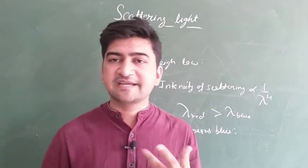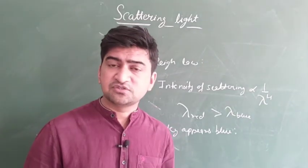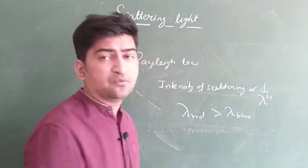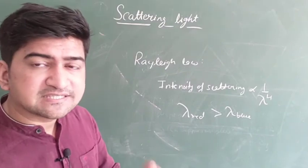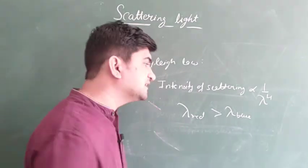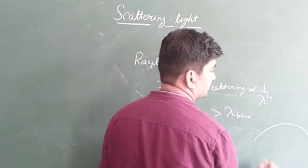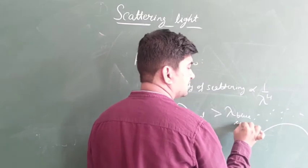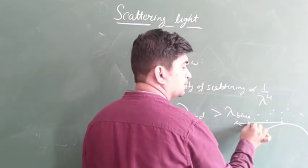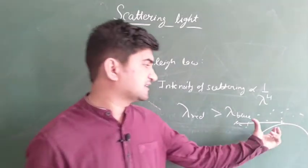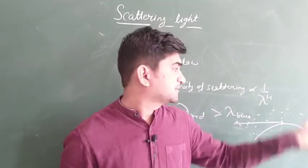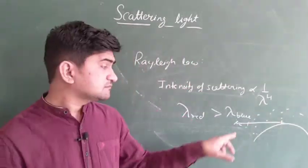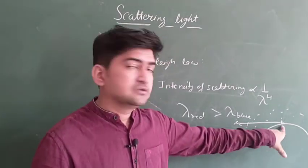Next, second application: sun appears red during sunrise and sunset. Why? The reason is that during sunrise and sunset, the earth and atmosphere with gases are here, sun is here. Light reaching us passes through maximum molecules of the atmosphere during sunrise. Similarly during sunset, when it's here, much of the atmosphere is crossed.